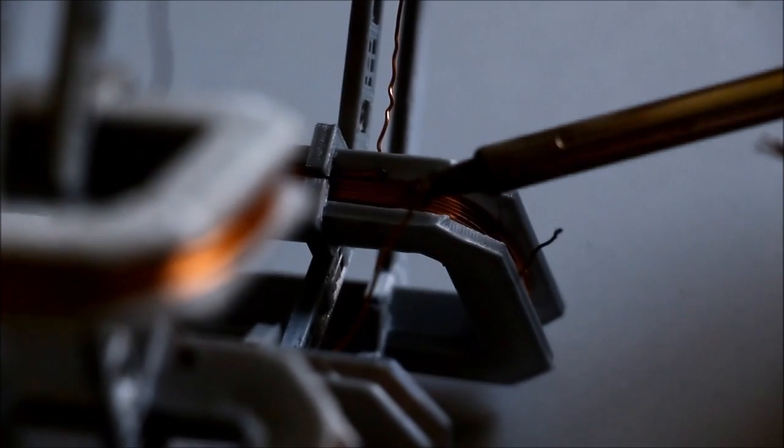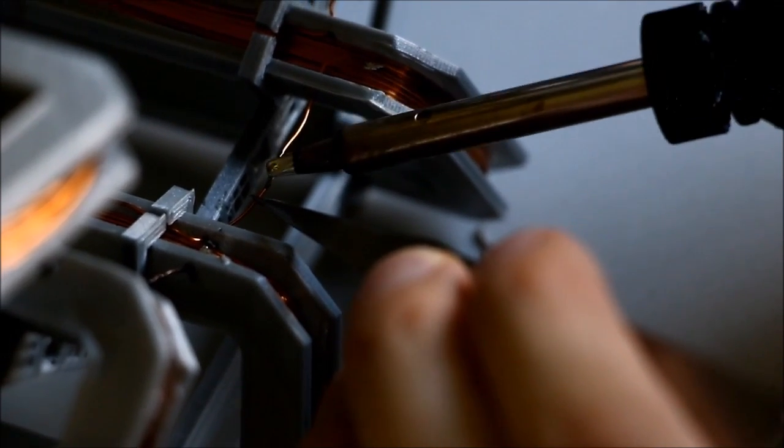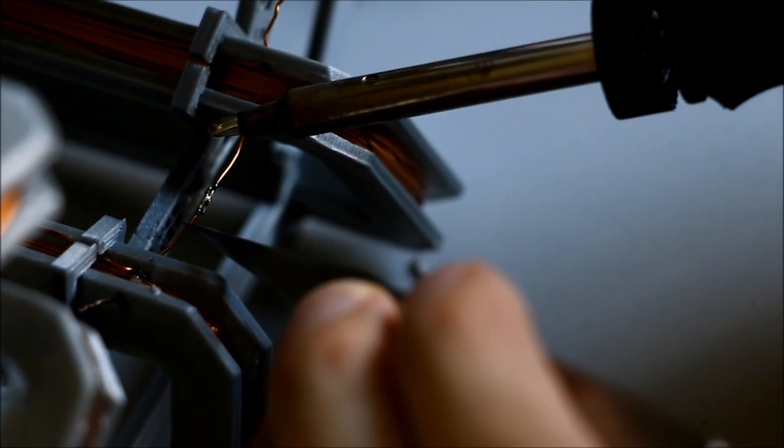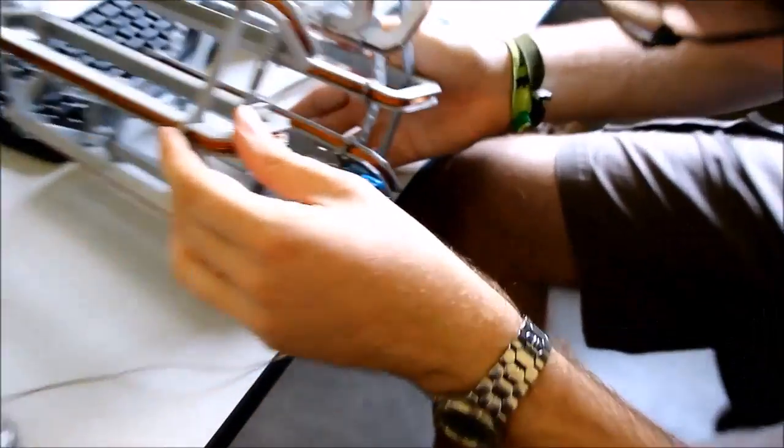And because it's so hot, it will remove the whole isolation. That's it. Then, just solder the two wires together. And do this all around for all the coils. Many more to go.